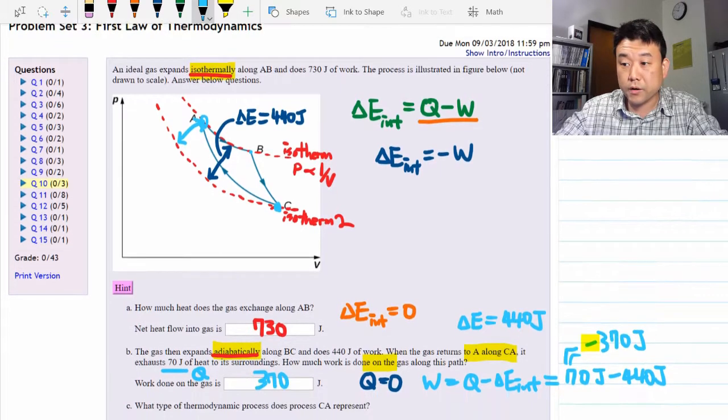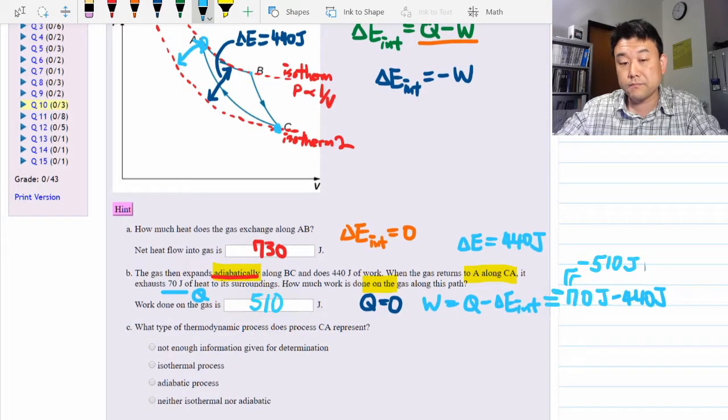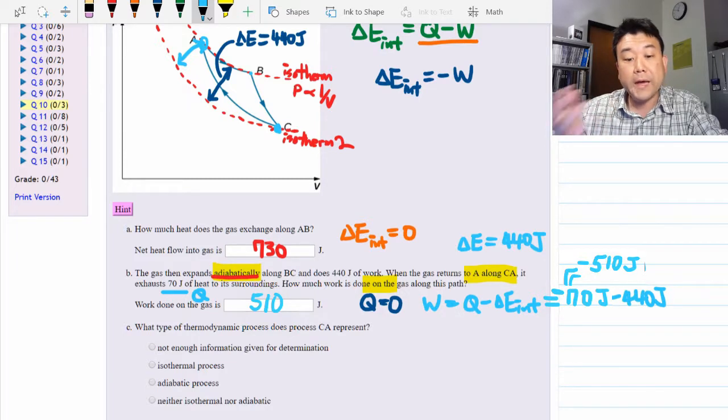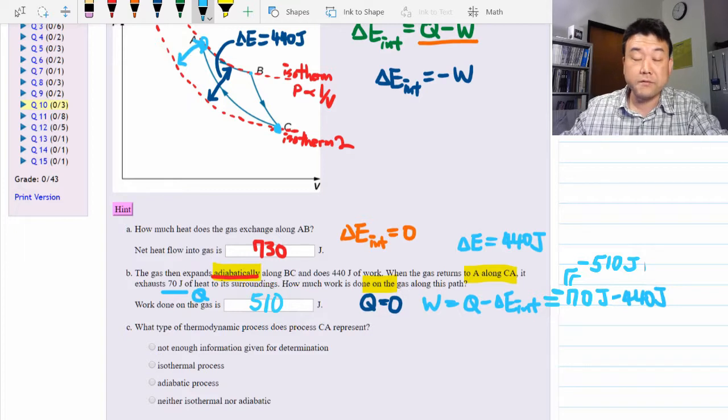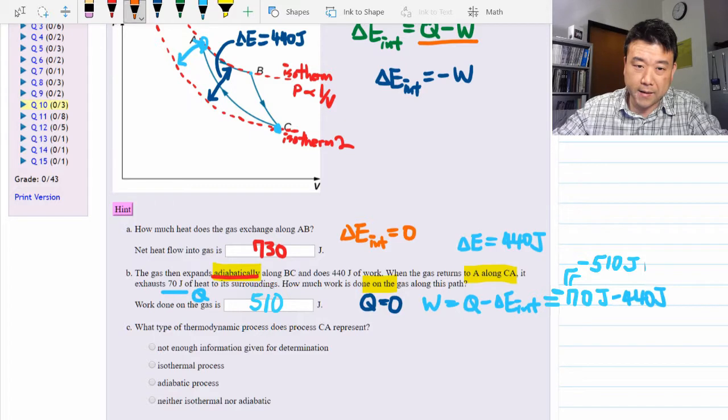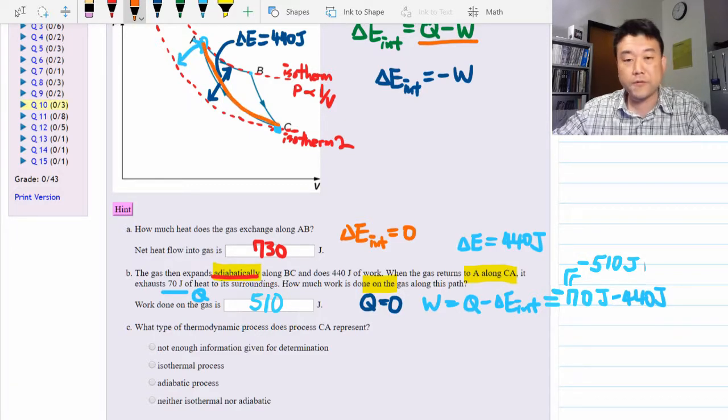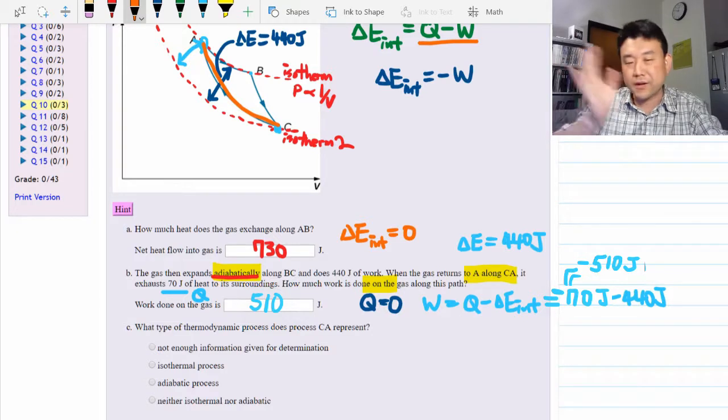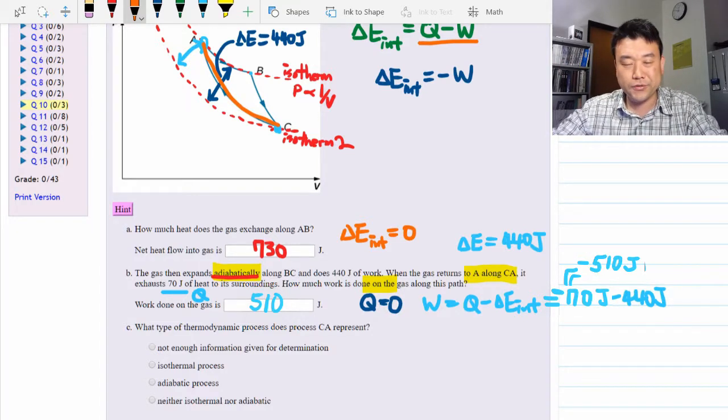Now for part C, this is where a good understanding of what isothermal and adiabatic means is very useful. It's asking what type of thermodynamic process does the process CA represent. If you somehow got into the bad habit of seeing this curve, and curve means isothermal, then you are going to get tricked the way I meant to trick you.